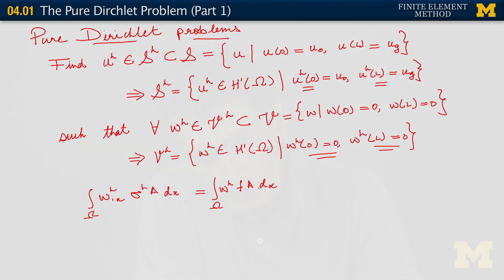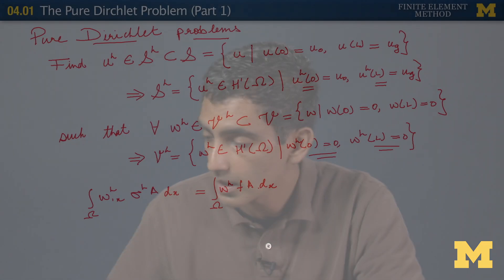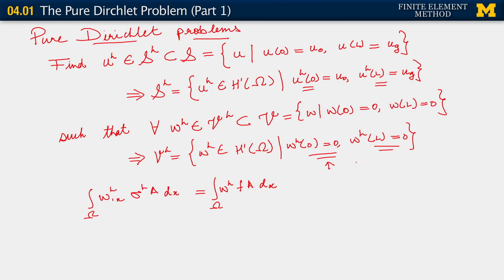What needs to hold? Well, the same old weak form. Integral over omega w_h,x sigma_h a dx equals integral over omega w_h f a dx. And we're done. There is no Neumann data, so we don't have the contribution from the traction. Essentially the formulation is the same as we've studied for the Dirichlet-Neumann problem. The only detail is what happens with our homogeneous Dirichlet conditions on the weighting function.